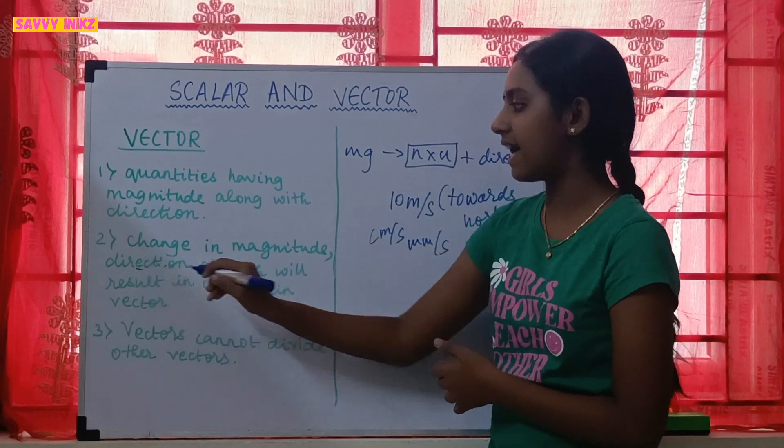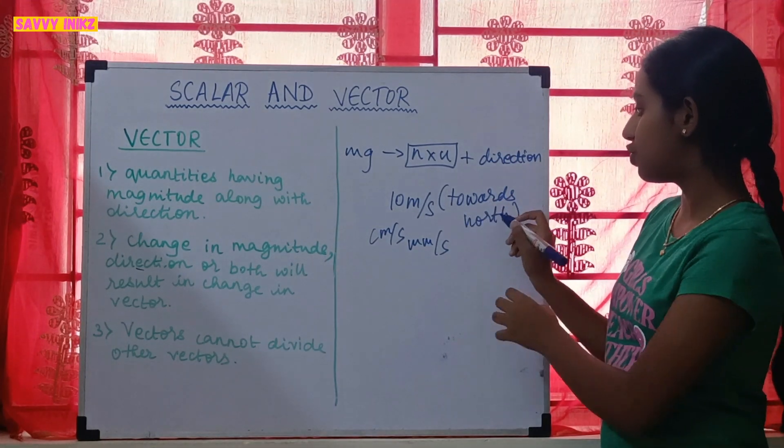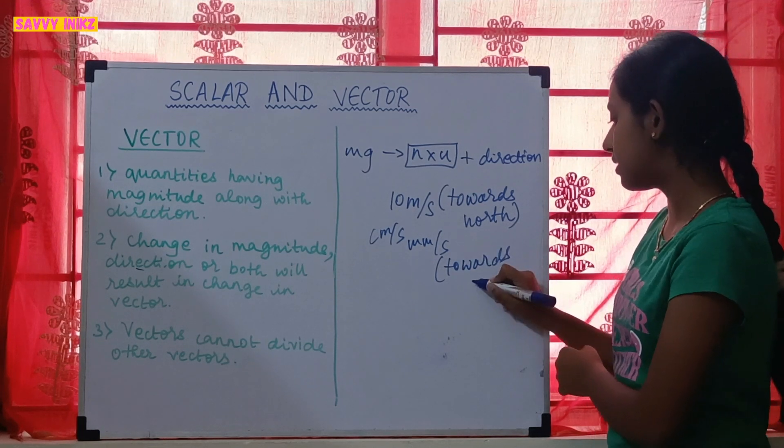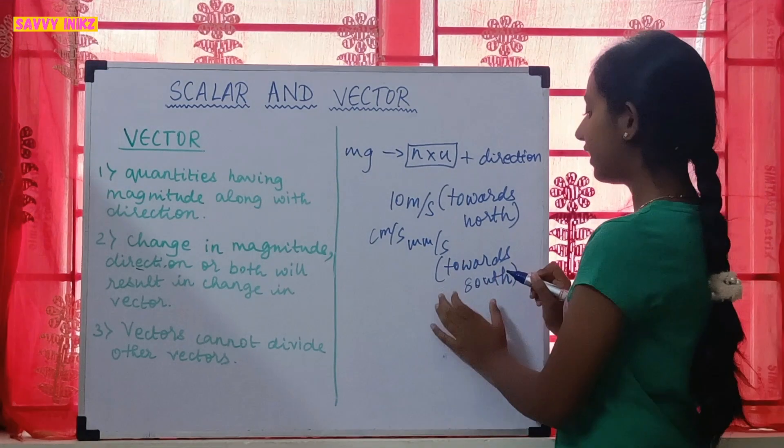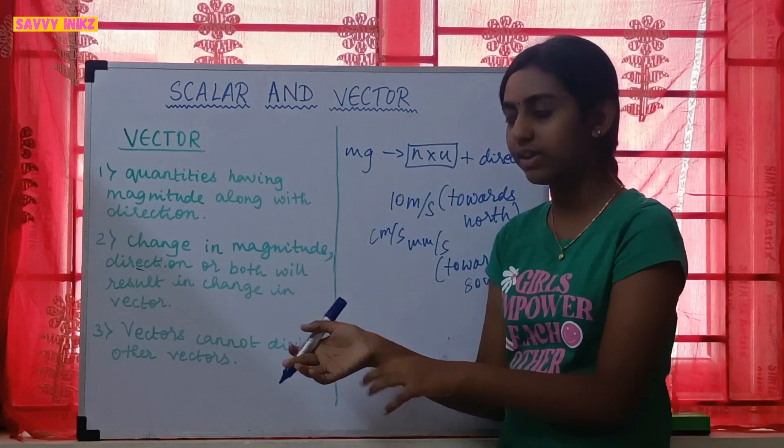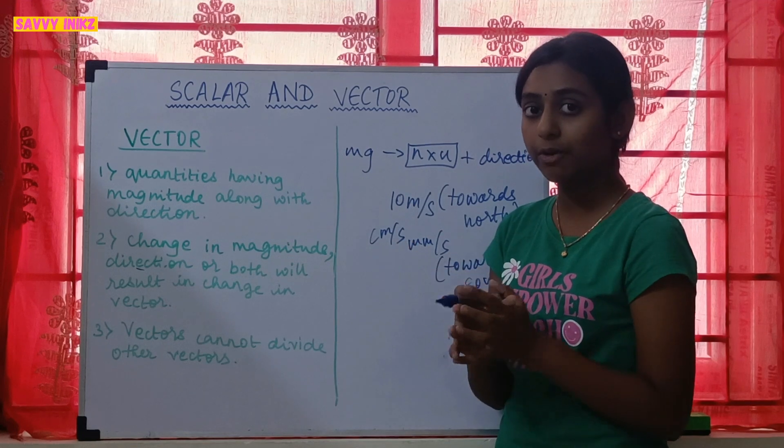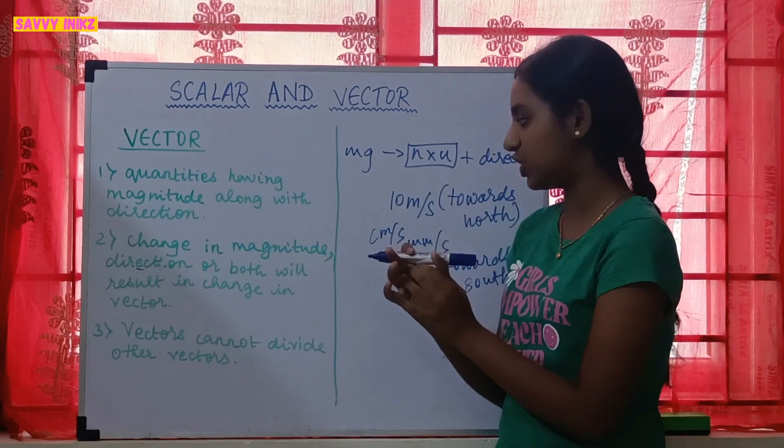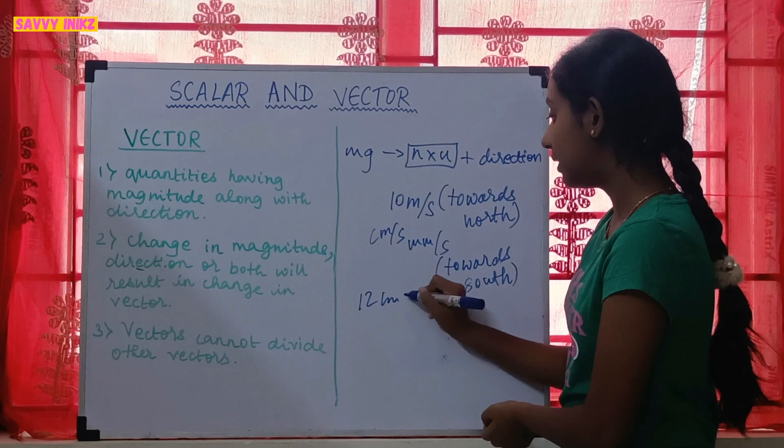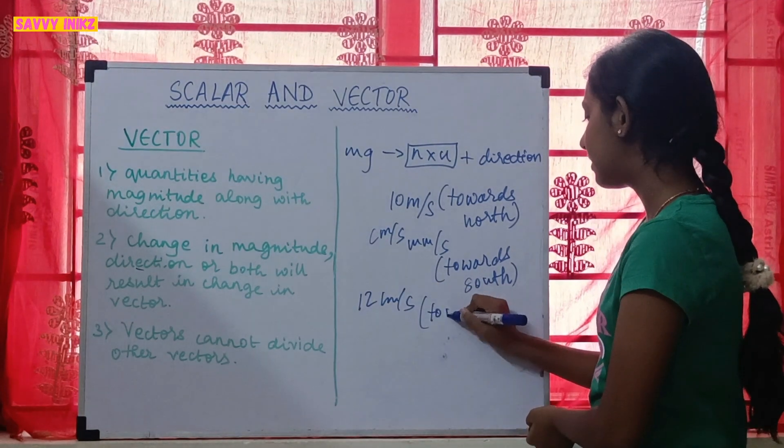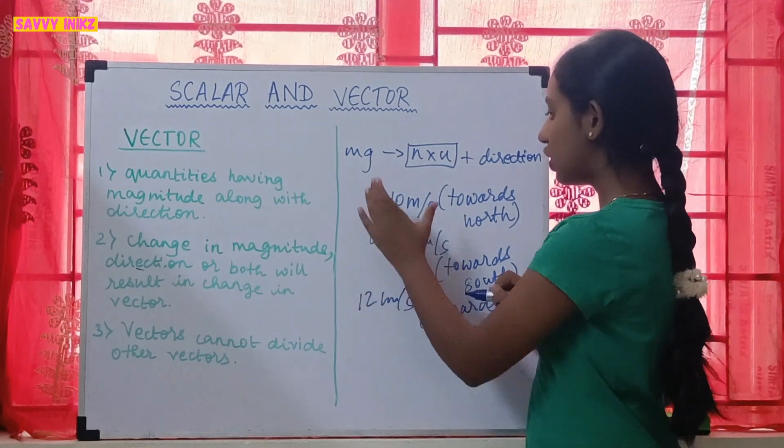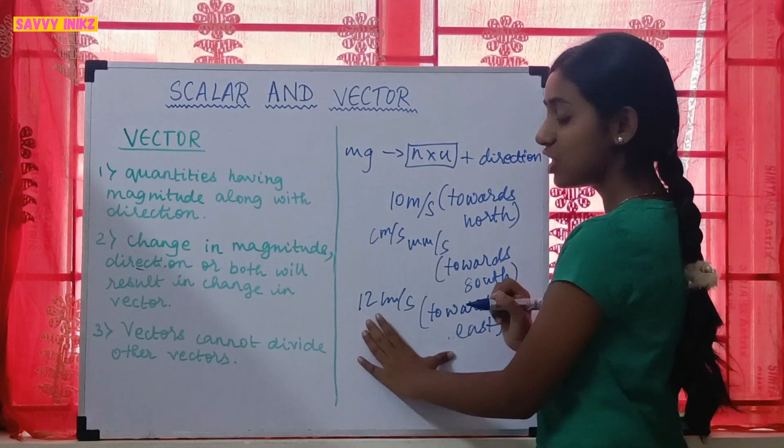The second is I can change the direction. Now changing the direction, since it's originally going towards north, I can change the direction as the physical quantity is going towards south. Now by changing this, the vector value will also change. So these are two types. And the third one is that by changing both magnitude as well as direction. If you change both of them also, that time also the vector quantities will change. So 10 meter per second towards north is the original form. I can change it as 12 centimeter per second towards east. So you can see that it's a completely different vector value. So by changing these things, you can change the vector value.